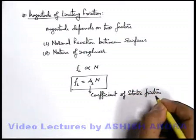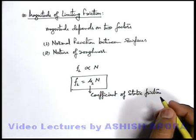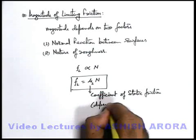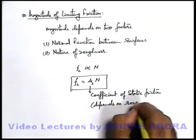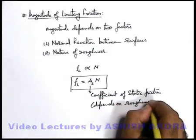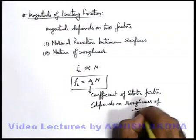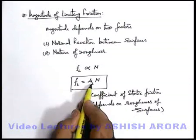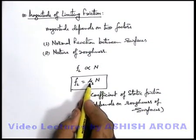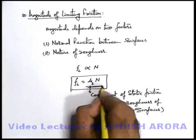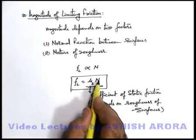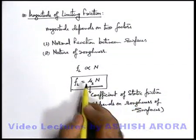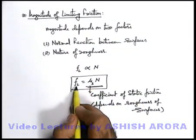This is a coefficient which depends on the roughness of the surfaces in contact. If surfaces are more rough, the value of the static friction coefficient will be more. So mu s multiplied by N — the product of the normal reaction and the coefficient of static friction for the pair of surfaces in contact — gives the magnitude of limiting friction.